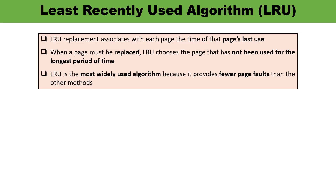First let me give you a brief about the Least Recently Used algorithm, LRU. From the name itself it is clear — least recently used means the thing or the number which is being used least in recent will be replaced. You have to identify which data is not being used for the longest period of time — that must be replaced. LRU is the most widely used algorithm because it always provides fewer page faults compared to other methods. In the previous video I talked about First In First Out algorithm, so you can review that also.